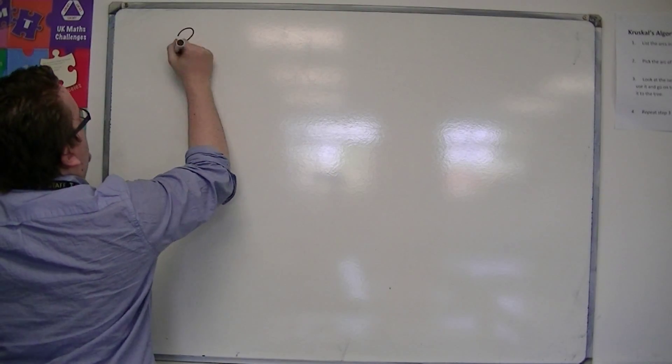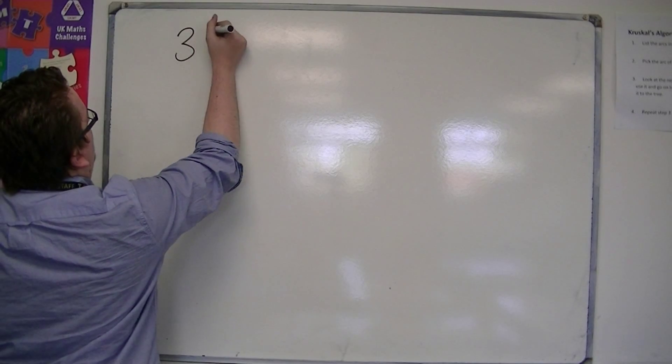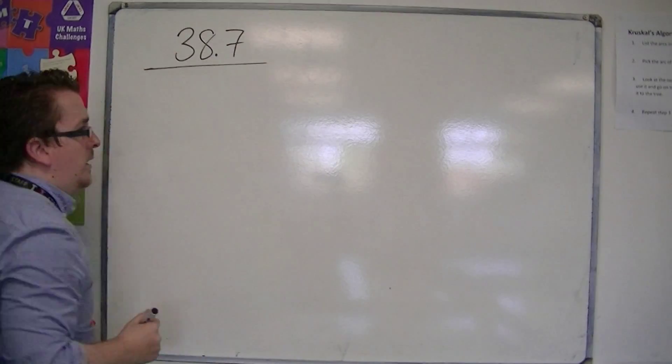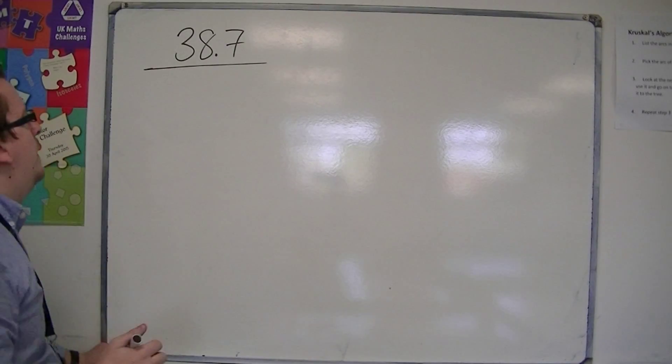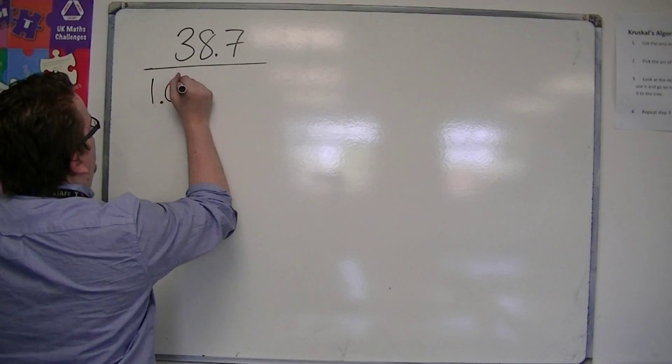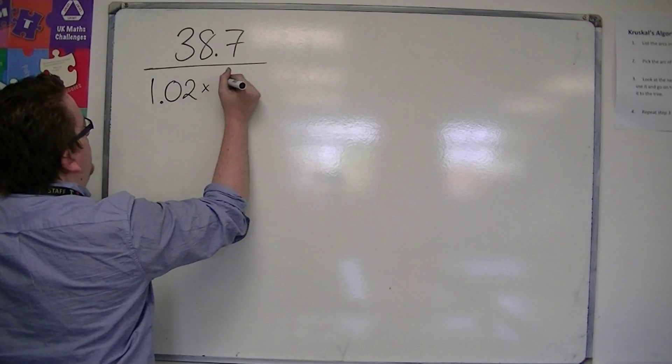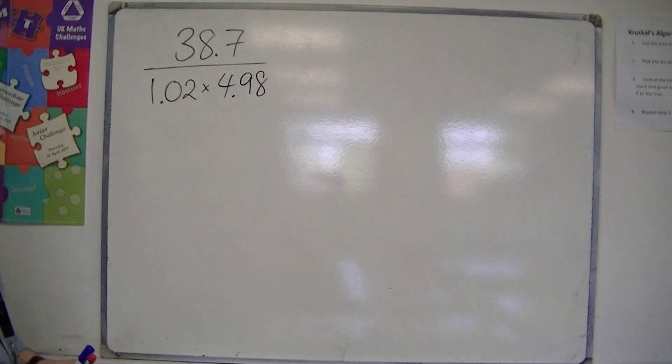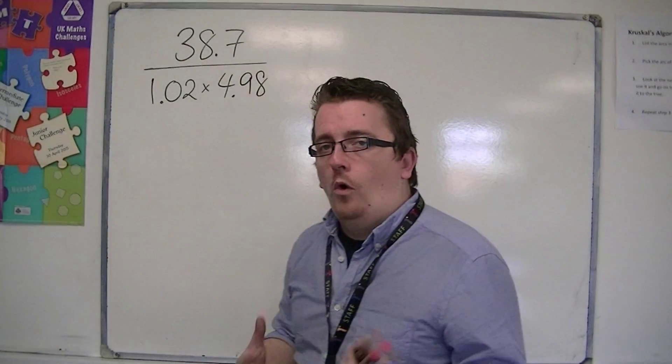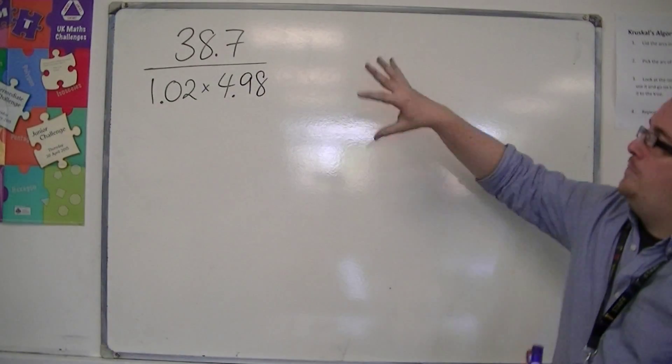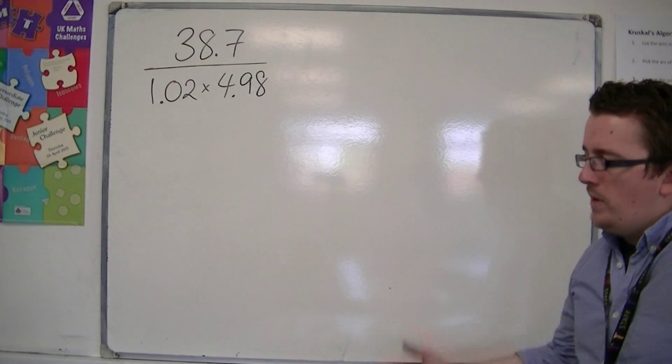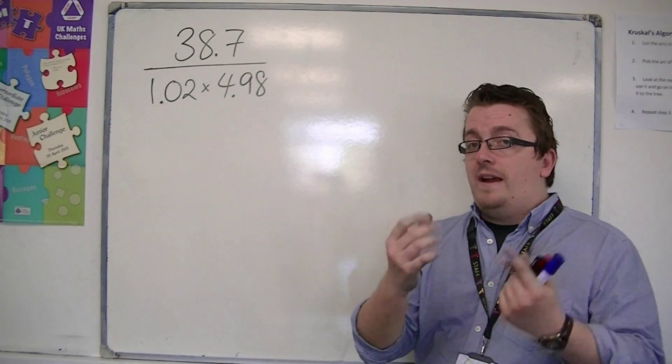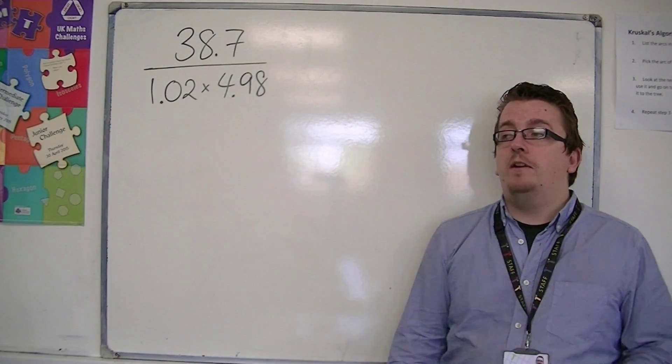So let's look at something a little bit more fiddly. Let's say we've got 38.7 divided by 1.02 times 4.98. Okay, so actually what this is looking like is a big fraction. But remember, when calculating a fraction, you do top divided by bottom. We're going to look at that again in another video as well.